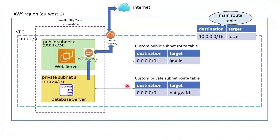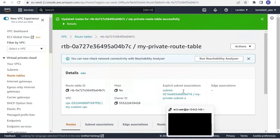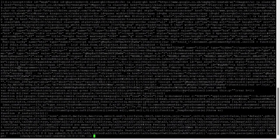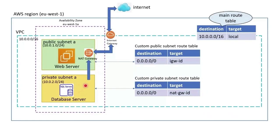What we just did is add this route to our route table. Now let us check if we are able to access the internet. Yes, now we are able to access the internet from our DB server. This was all for this video — if you liked the demo please leave a comment and consider subscribing to my channel for more such videos.